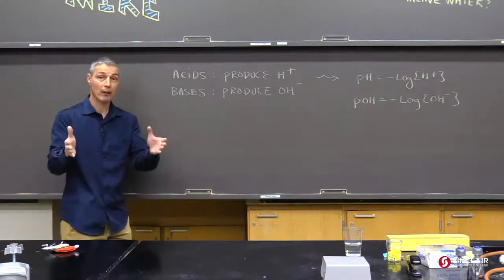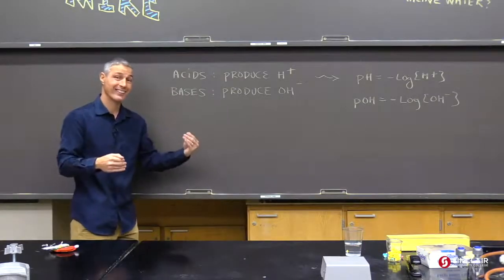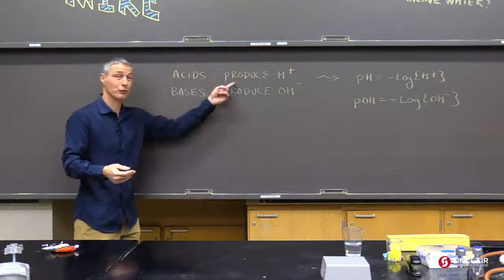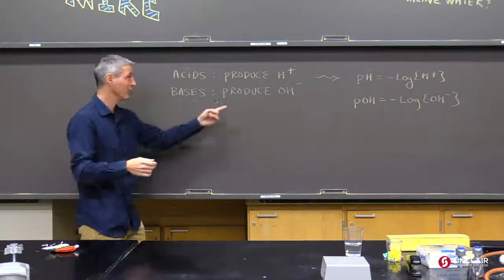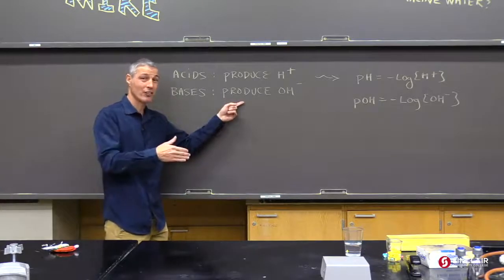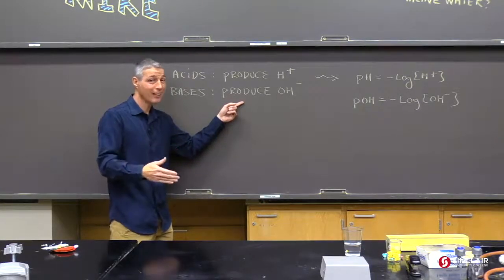A little background. First of all, acids, when they dissolve in water, produce hydrogen ion. That's the H in what we call pH. Bases, which are the opposites of acids, produce hydroxide ion.